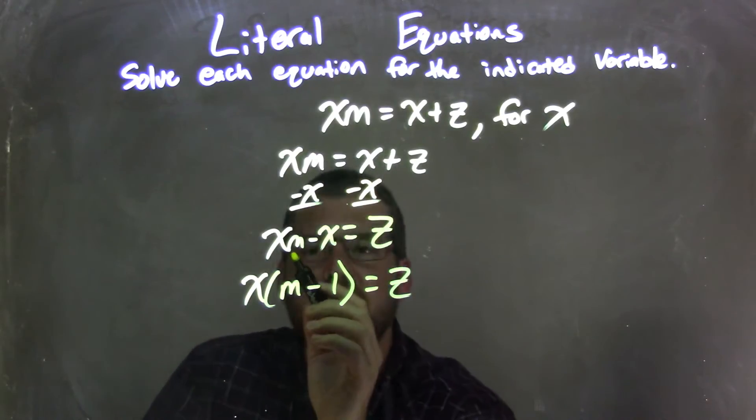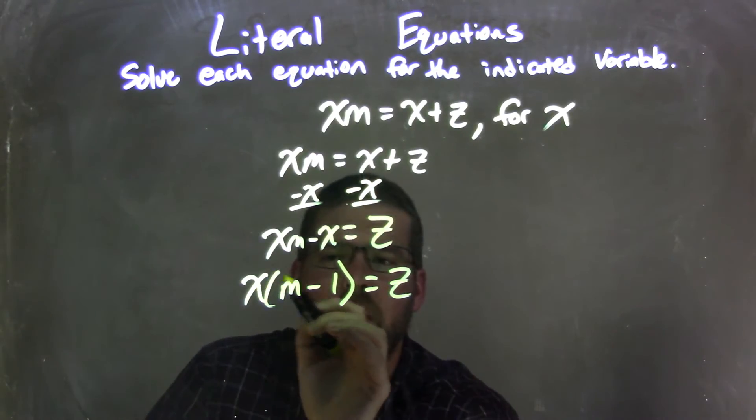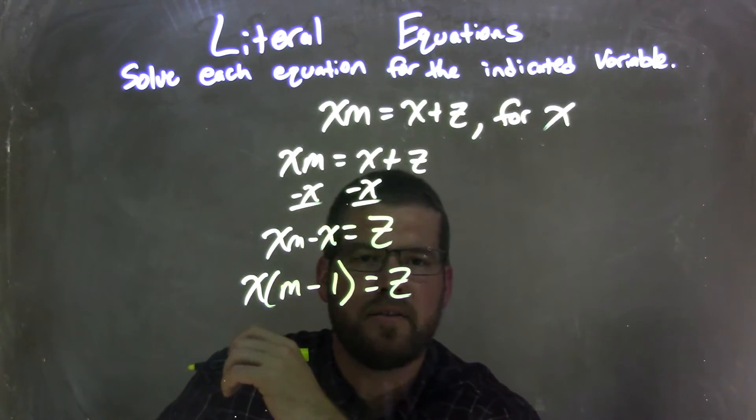which is still there on the right. And you can see that by distributing this, right, multiplying the x back in. x times n is xm, and x times 1 is x, and subtraction sign is still in between.